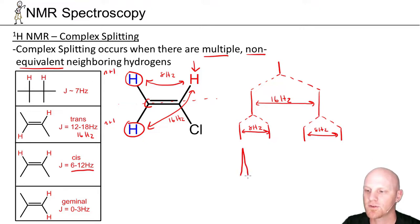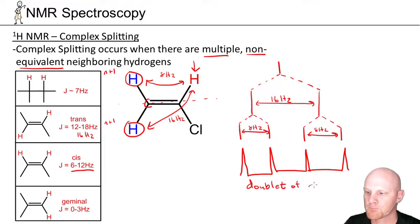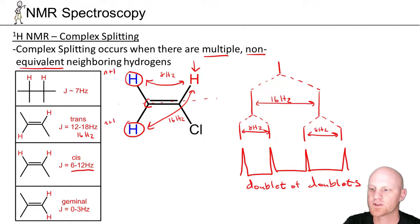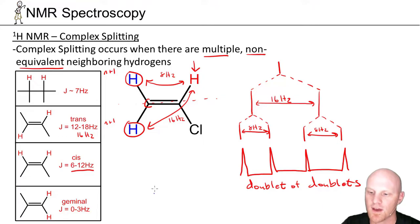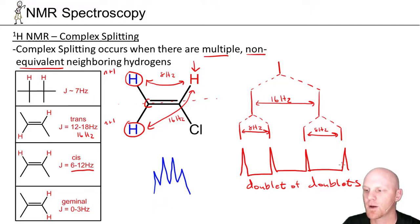Your typical signal might look something like this in the H-NMR spectrum, and we'd call this a doublet of doublets. We can distinguish this from a quartet: all four peaks in a doublet of doublets would be equal in height, whereas a quartet generally has peaks that crescendo towards the center, following Pascal's triangle. We don't have that in this doublet of doublets — all four signals would be exactly the same intensity.